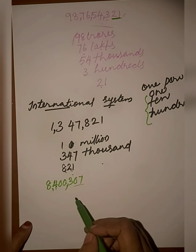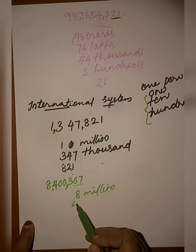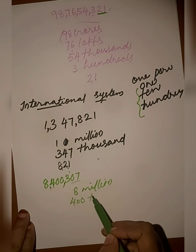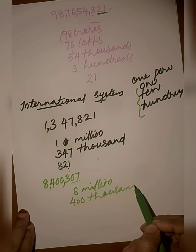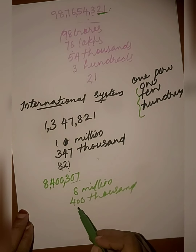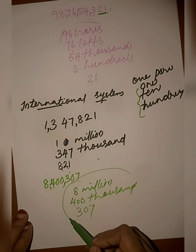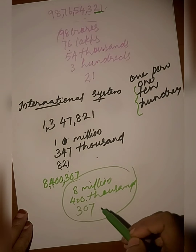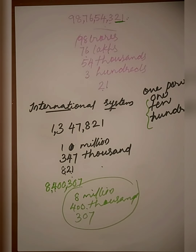How many millions? Eight million. How many thousands? Four hundred thousand. How many hundreds, tens, and ones? Three hundred seven. So the number name of this number is: eight million four hundred thousand three hundred seven.